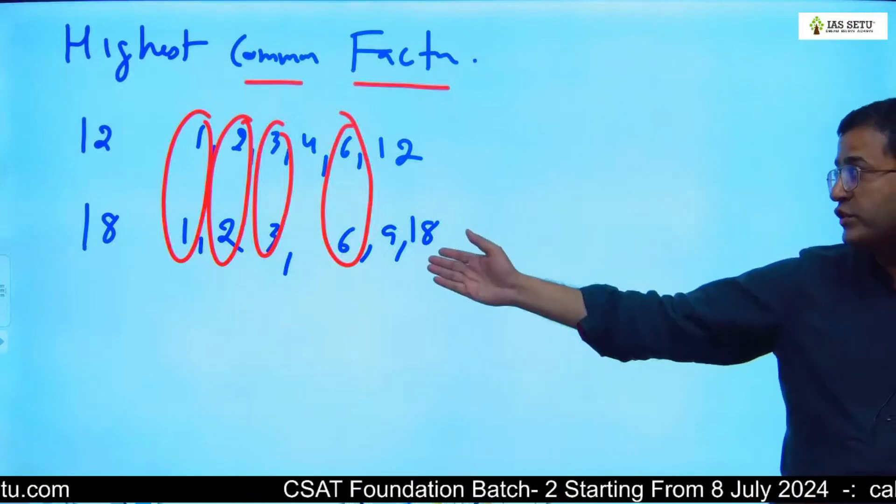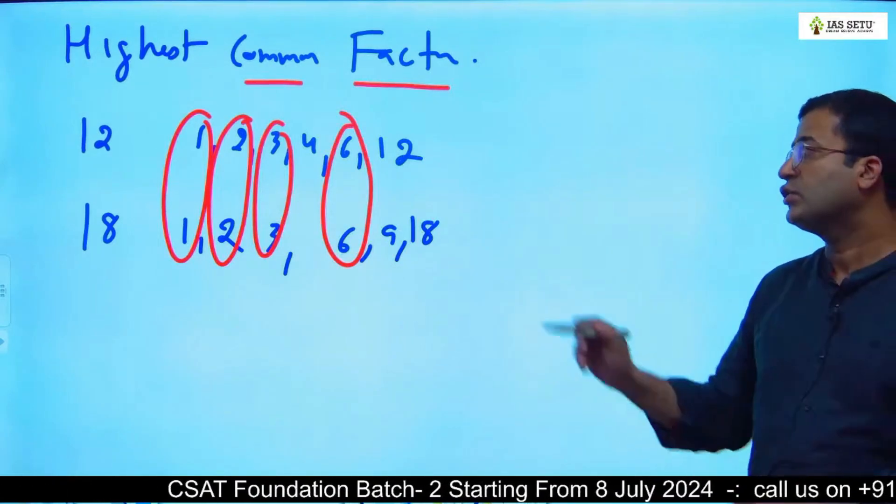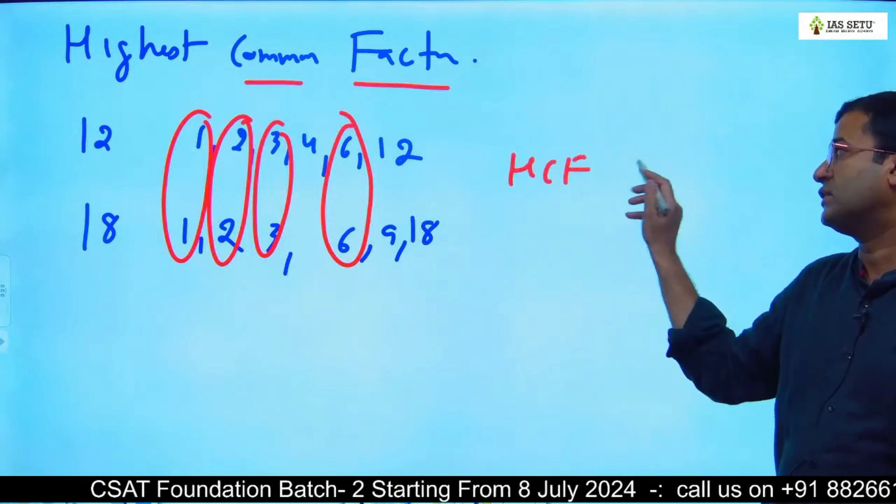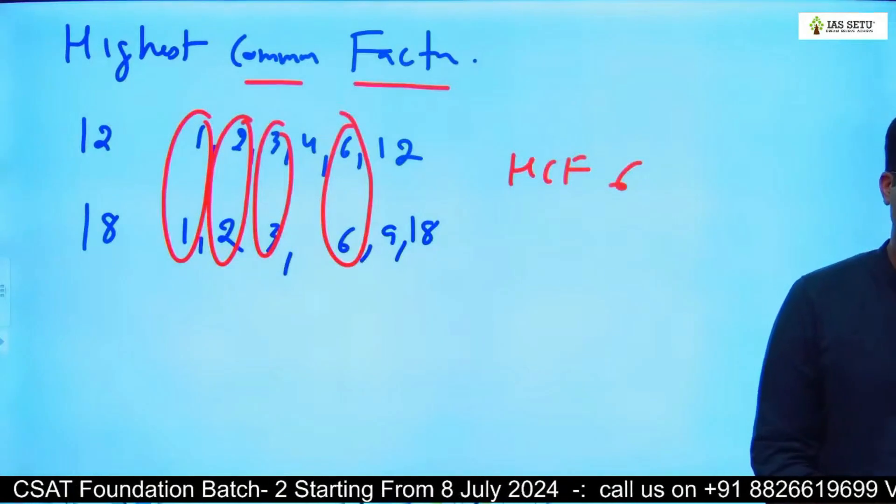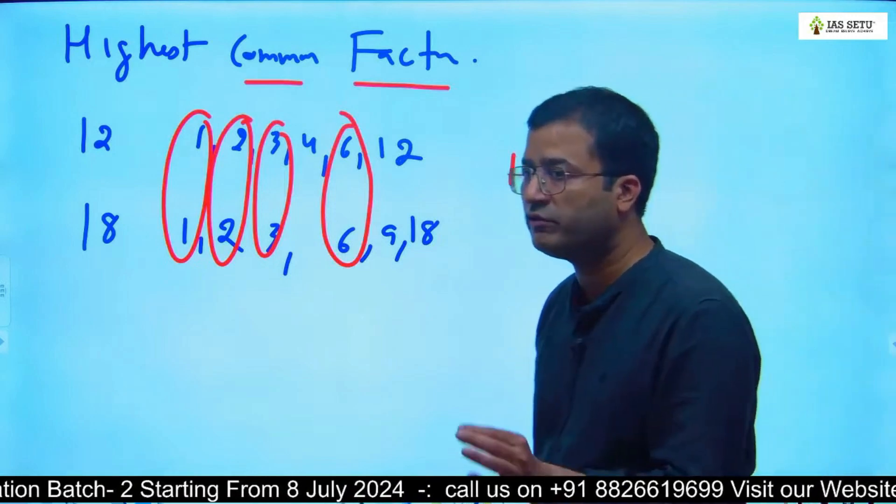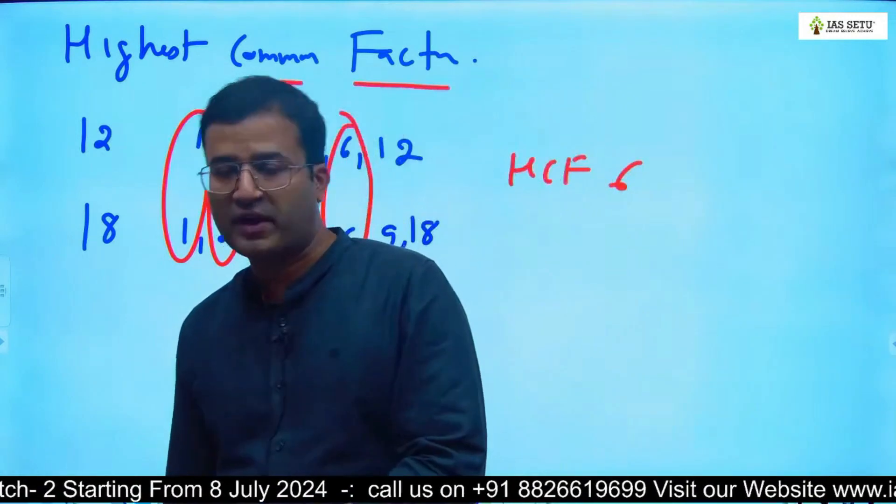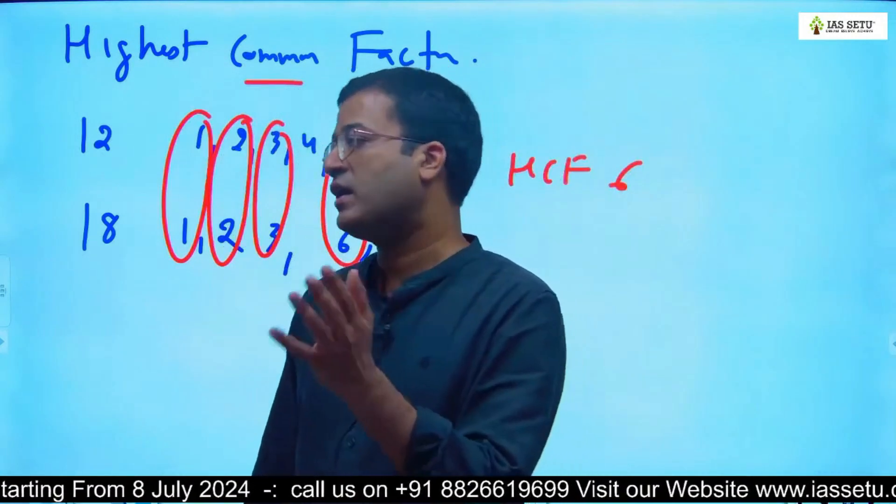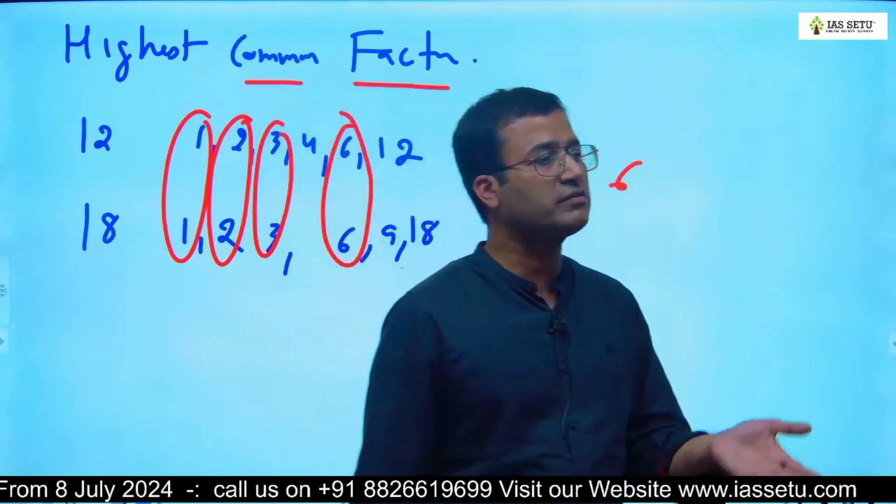1, 2, 3, and 6. Out of these common factors, 6 is highest. So clearly, what is the definition of HCF? Among the factors we have to take common factors, and among the common factors the highest one is HCF.